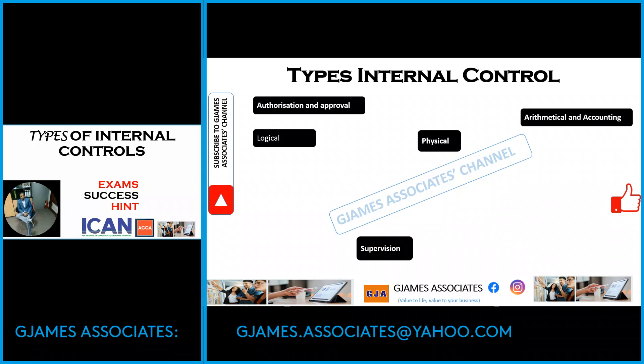There should be arithmetic and accounting control put in place. As a matter of fact, the accounting department should have processes actually put in place — what to do, what to do next, who does what, and the logical sequence of things — and it should be procedural. This is another form of control that should be put in place.